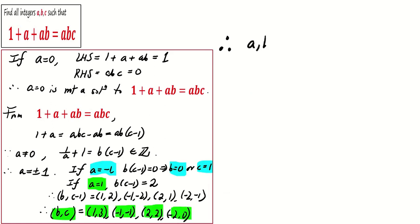Therefore, the values of (a, b, c) are either (-1, 0, c) or (-1, b, 1) for any integers b and c.